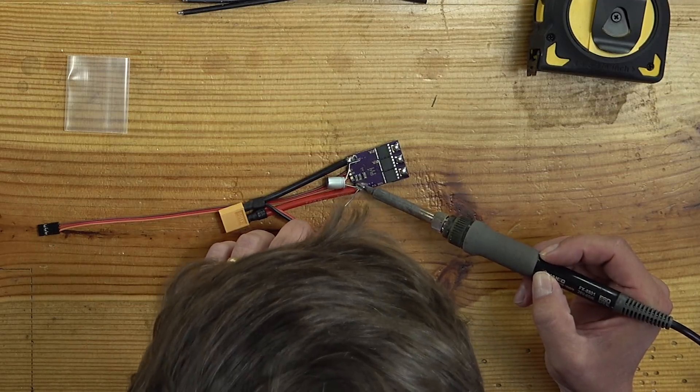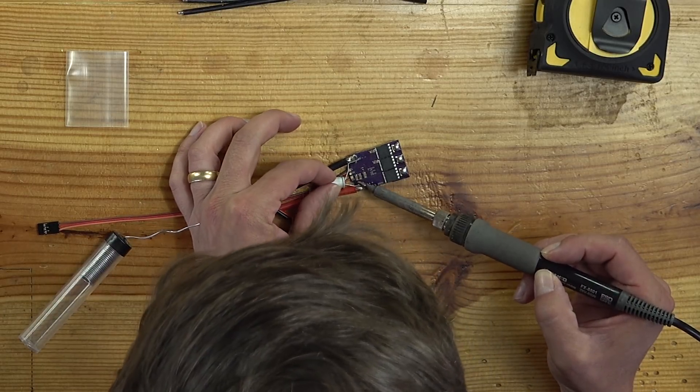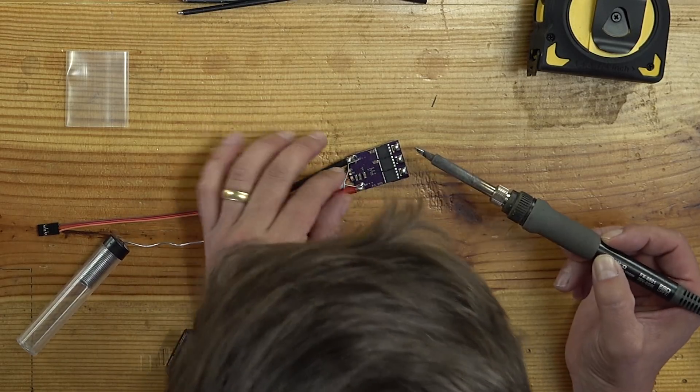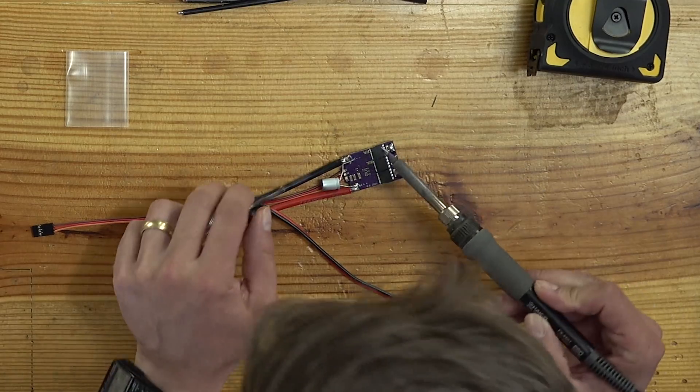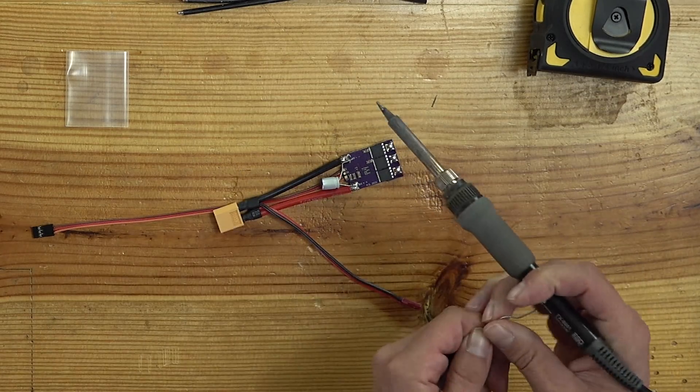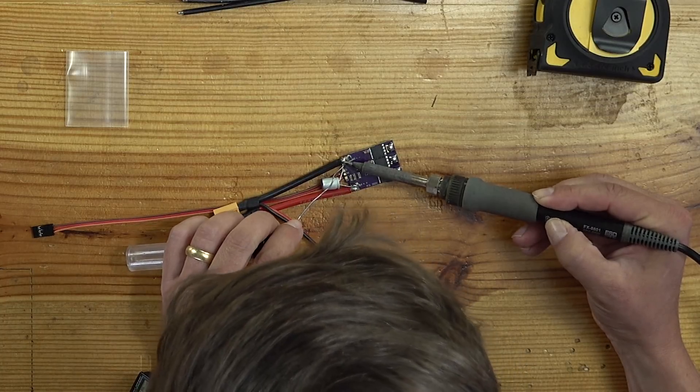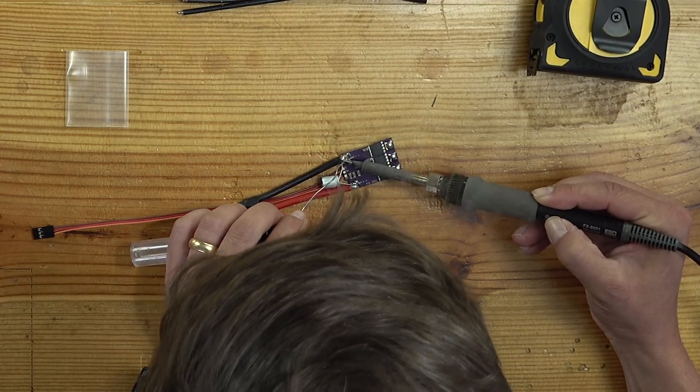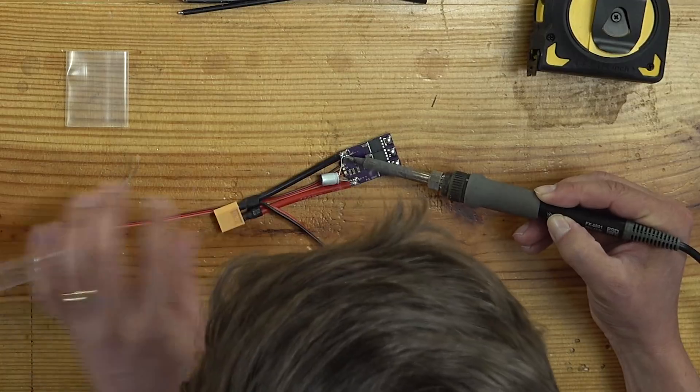That makes it a little easier just to get it in one spot first. Bam. Just like that. It's going to hold. Now I'll go over to the other side. We're going to get our negative.